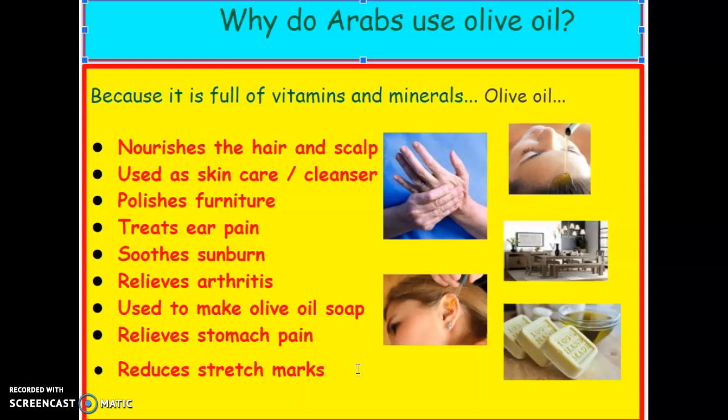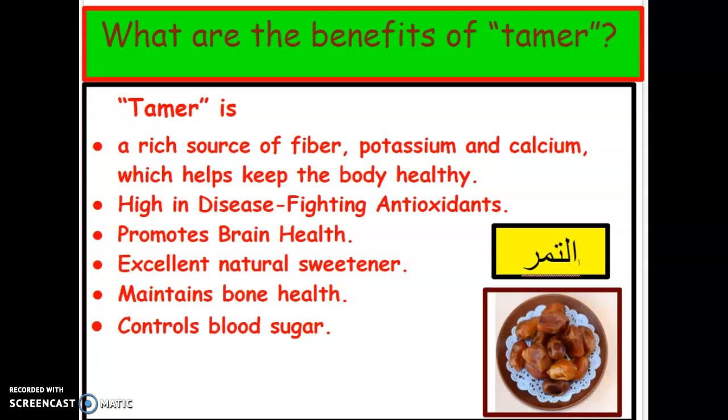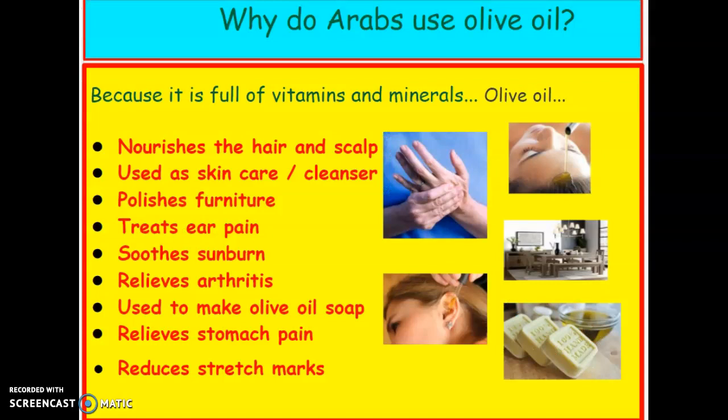Next time we go to a pharmacy, or check products at home — shampoo, cleanser, sunburn cream — let's look at the ingredients on the bottles or boxes and see if they mention olive oil. I think they do! Those were the two essential items Arabs use most in their households: olive oil and tamr, the dates.